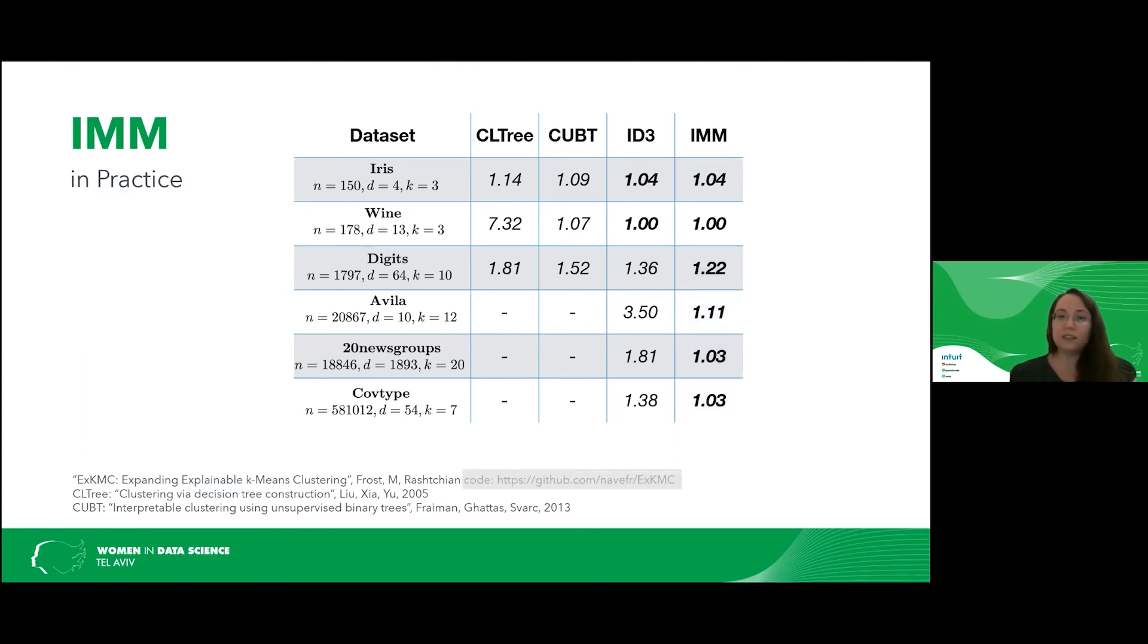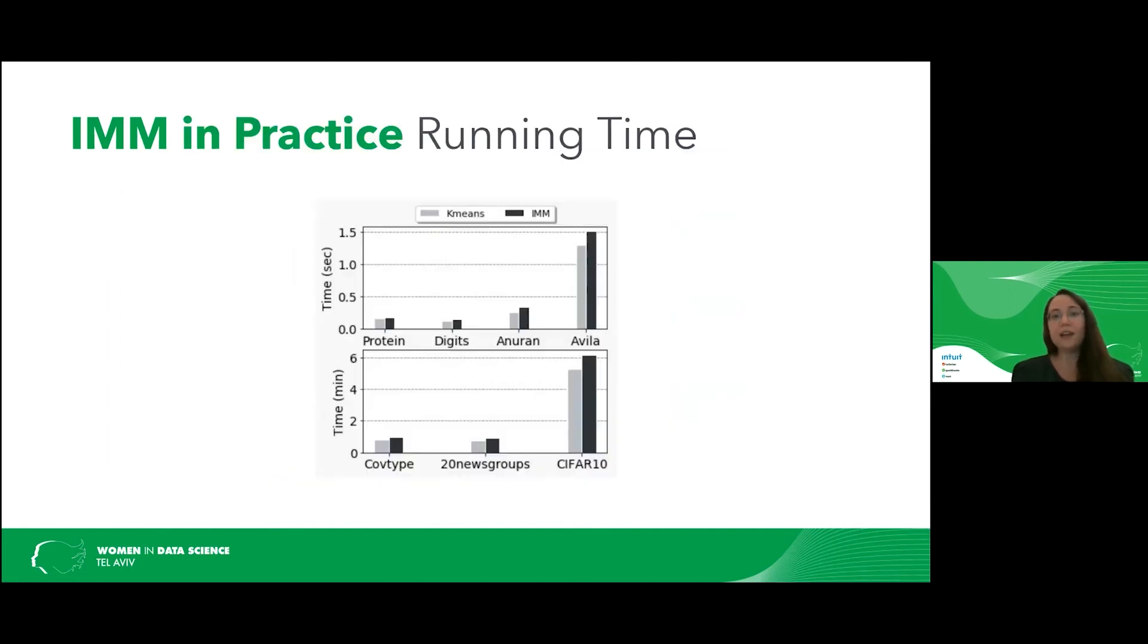You can find the code in our GitHub. And let's look at the running time of our algorithm. So we compare the running time of the IMM algorithm to the k-means time. It's an implementation of k-means in scikit-learn. And what we see is that IMM is comparable to k-means.